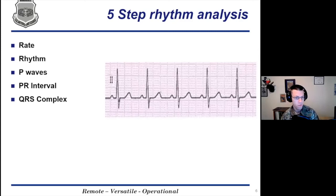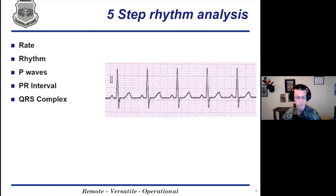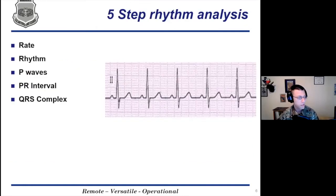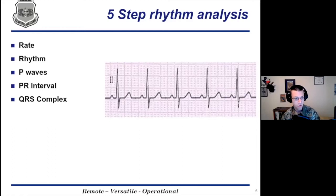When going over 12 leads or any rhythm, it's really important to have a consistent approach. The main thing is to find an approach that works best for you — something you're going to remember to do consistently every time. Without that, it's easy to miss something on your 12 lead that could have a big implication for your patient or cause us to go down the wrong treatment path. My five steps: first, calculate your rate — is it fast or slow? Second, look at your rhythm — is it regular or irregular? Third, look at your P waves — are they there, where they should be? Fourth, look at the P-to-R interval. Fifth, look at your QRS complex — is it wide or narrow?